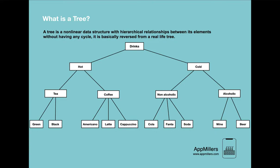We can see that drinks in the café menu have been organized in a nice hierarchy, which makes it easier for customers to choose. They may not be aware that they are using a tree data structure, but this way of organizing data makes it easier for both customers and the owner. In the world of data structures, this is called a tree data structure.